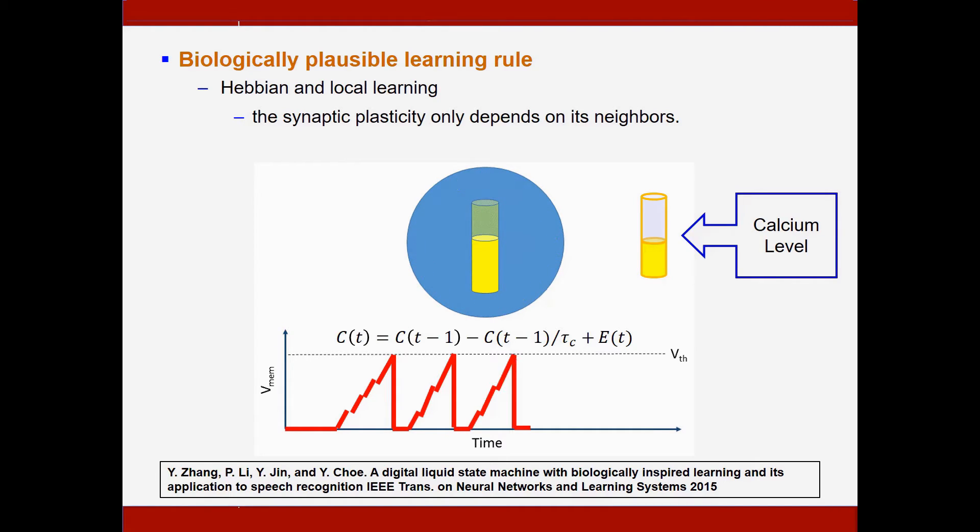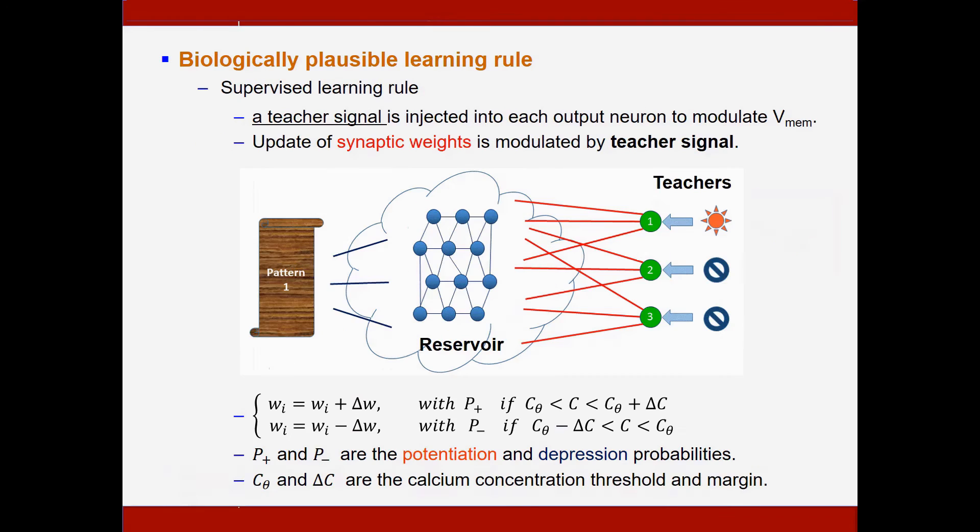And because we are trying to realize a supervised learning rule, a teacher signal is injected into each output neuron to modulate its membrane potential. Since the firing activity is influenced, the update of synaptic weight is also modulated by this teacher signal. For example, the output neuron corresponding to a particular input pattern will be potentiated by the teacher signal, while the other output neurons will be depressed by this teacher signal. So according to the following equations, the synaptic weight associated with each output neuron are only updated when the calcium concentration of the neuron is in the correct region.